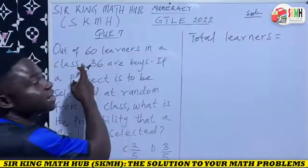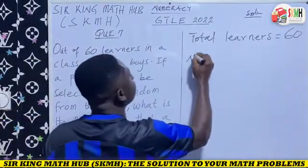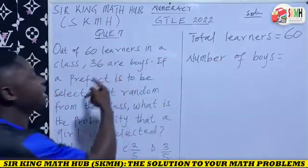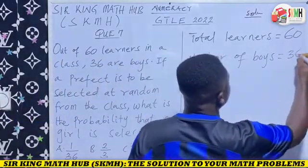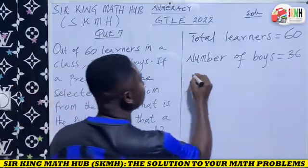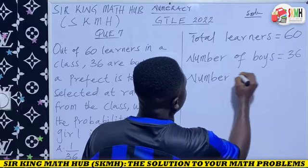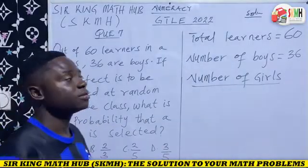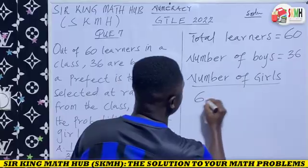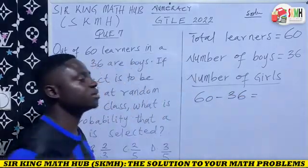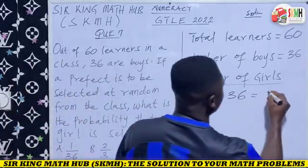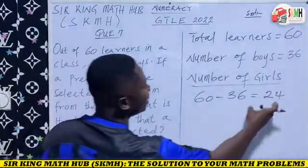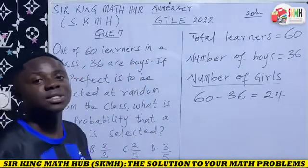We know the total learners to be 60. And in the class, we have 36 boys. So let's calculate the number of girls in the class. We need to subtract the number of boys from the total learners: 60 minus 36, that gives us 24. So we now have the total number of learners and the number of girls in the class, and we should be able to calculate the probability of selecting a girl.